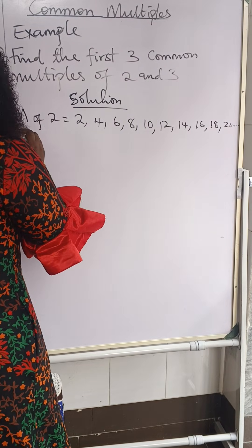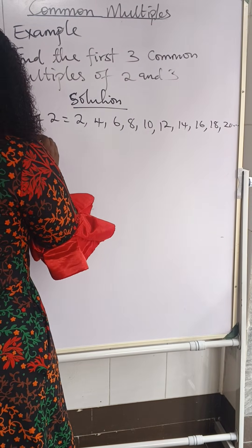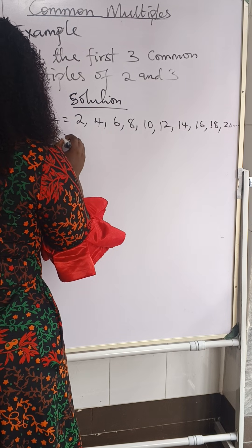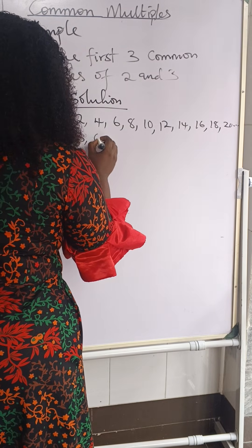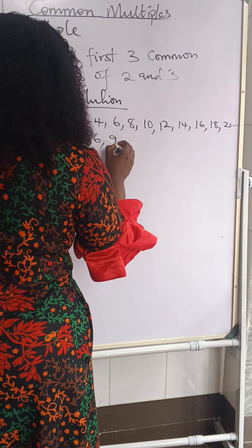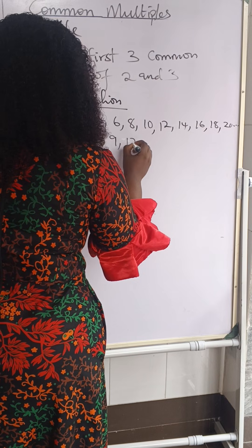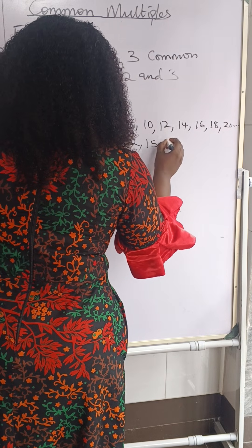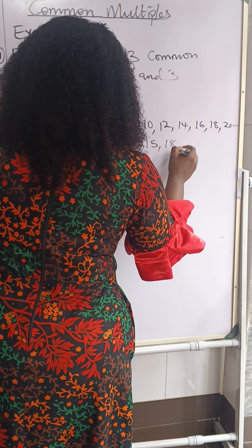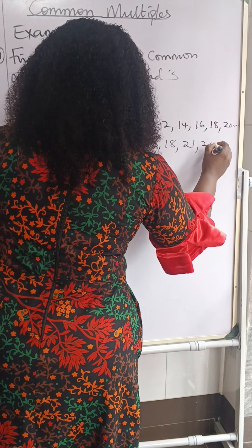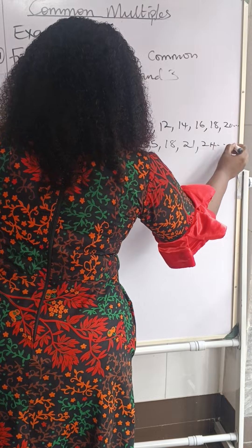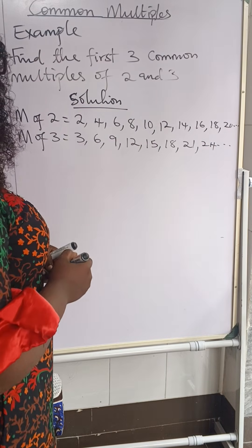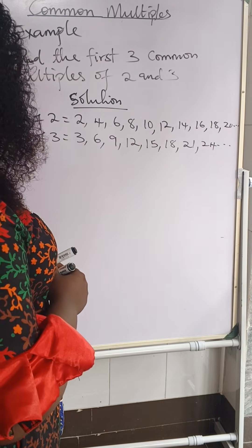Now let's look at multiples of three. We'll have: three, six, nine, twelve, fifteen, eighteen, twenty-one, twenty-four, and so on.